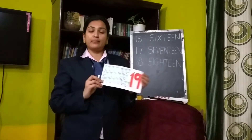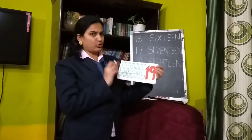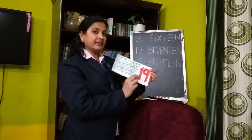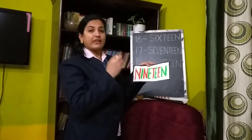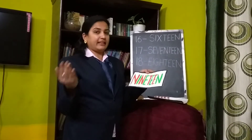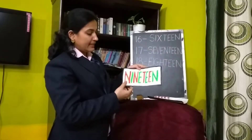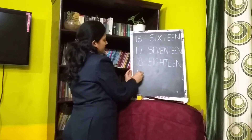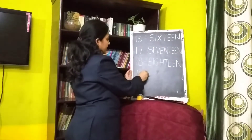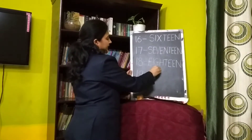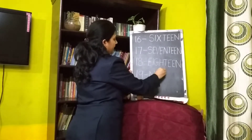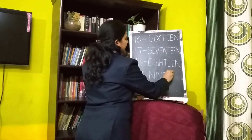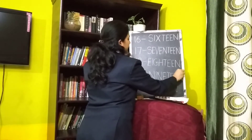Next number is 19. 19 Doremons — Doremon is single, but here I have 19. 1-9, 19. When we write 19, first write nine — N-I-N-E, 9 — then teen — T-E-E-N. So N-I-N-E-T-E-E-N, nineteen, 19.